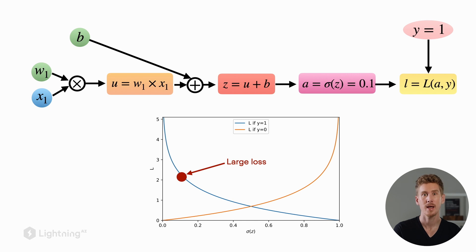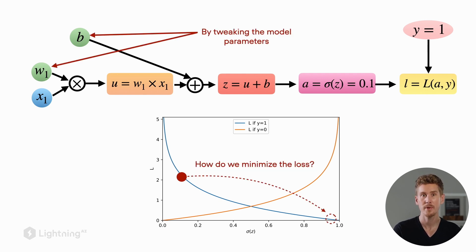Assuming that the class label is 1 and the activation output was 0.1, we had a large loss as we saw in the last video. Our goal now is to minimize that loss to bring it here to the right hand side. We said we can do that by tweaking these model parameters w1 and b.